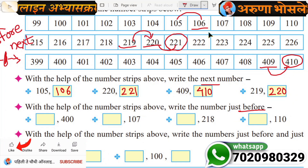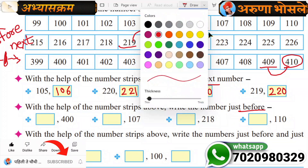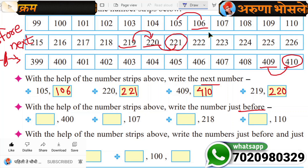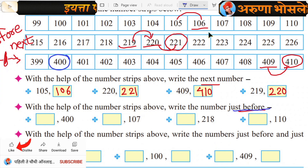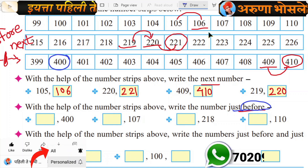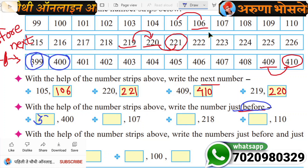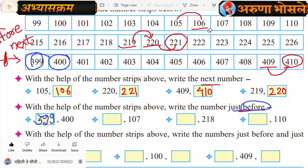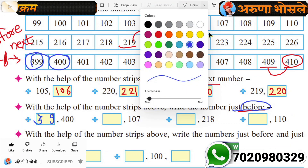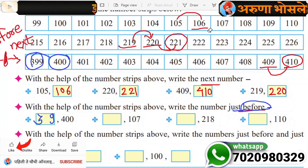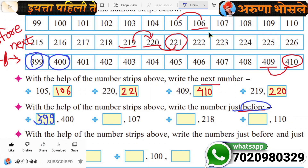Number is 400. Where is 400? Here. Now we need to find which number comes before 400. Before means the number that comes first. Which number is before 400? 399. Right here — three hundred ninety-nine. Three hundred ninety-nine is the before number of four hundred.